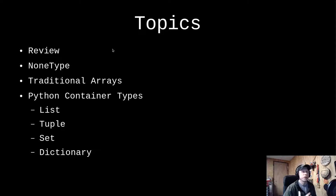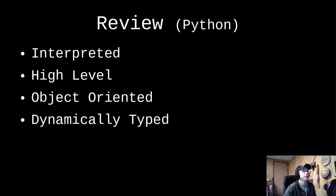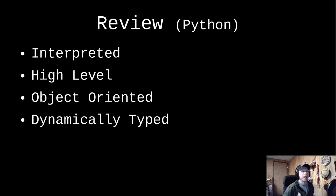We did a quick review — we talked about the None type, we'll talk about what a traditional array is, and then look at some container types because those traditional array concepts bleed into how we use them in Python. So just a little review: Python is an interpreted language, meaning I don't have to first compile it with some other program — I can just write Python code in a text file and execute it. It's a high-level language, meaning I don't have to get into the nitty-gritty details of every data type.